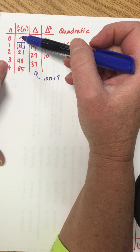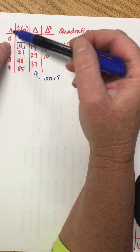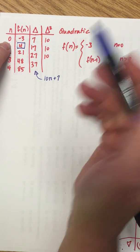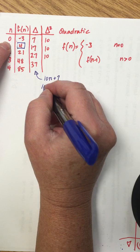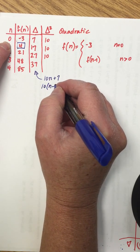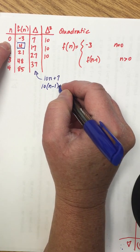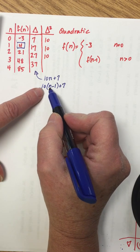So instead of using n right here we have to use the input that came before which is n minus 1. So make the substitution of n minus 1 for the n that you have there.